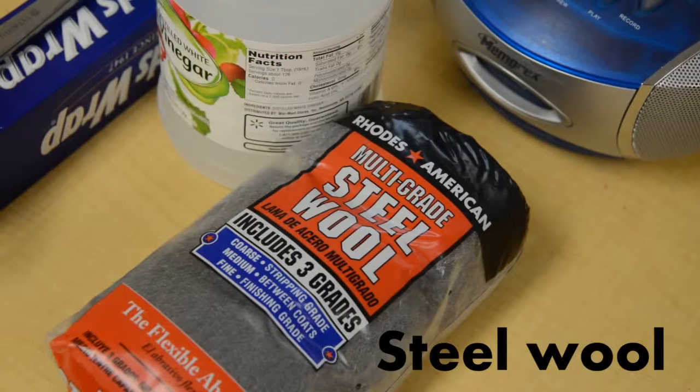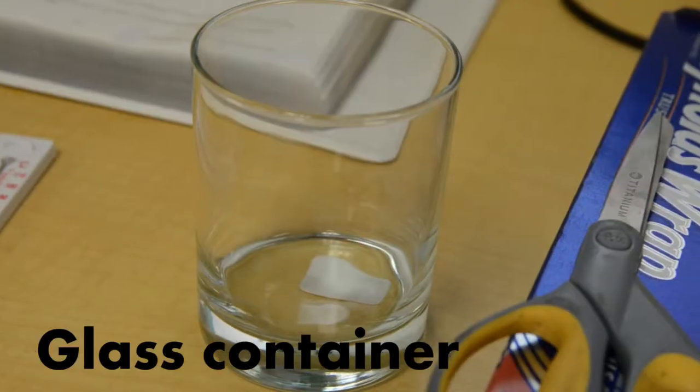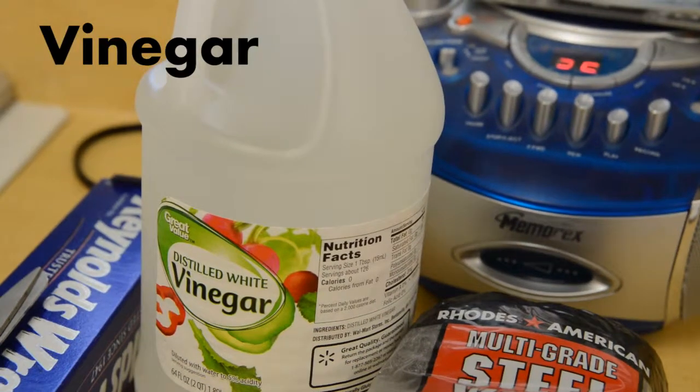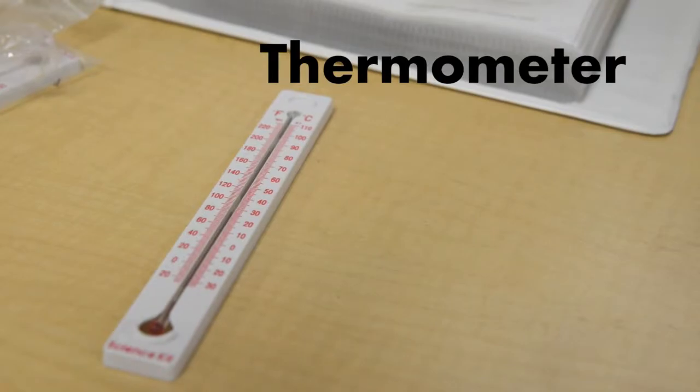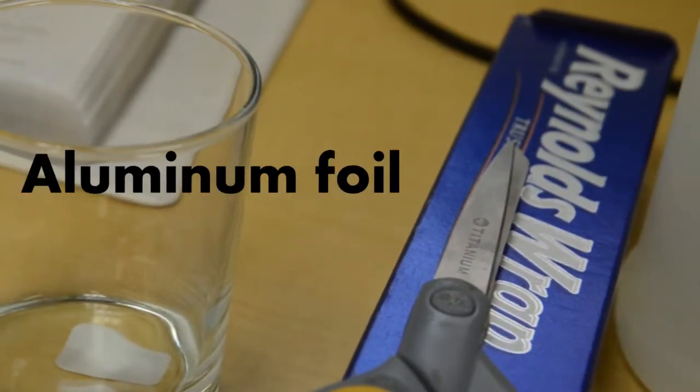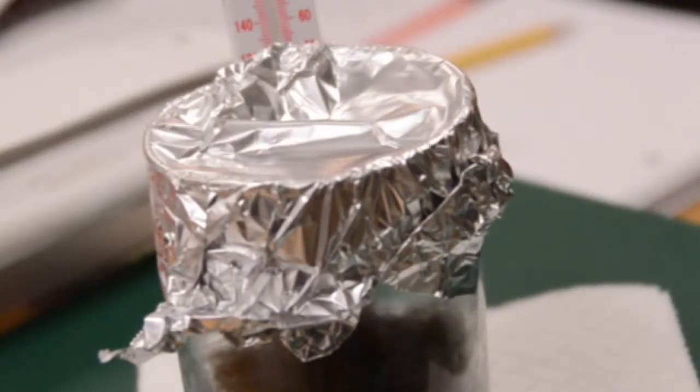The first thing we're going to use is steel wool. This is what you need. You don't want plastic. You're going to need vinegar. You need a thermometer. Our last ingredient that we're going to use in our chemical reaction is aluminum foil.